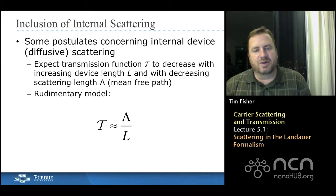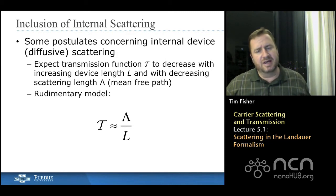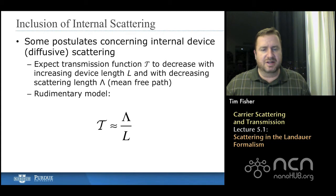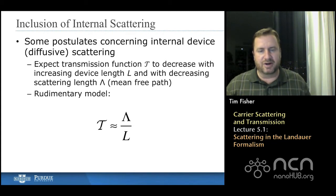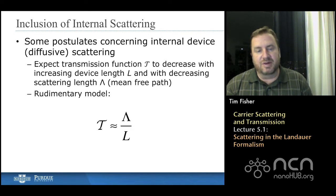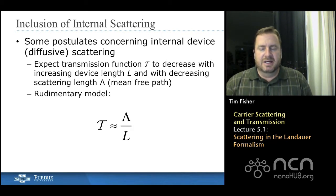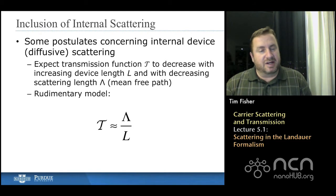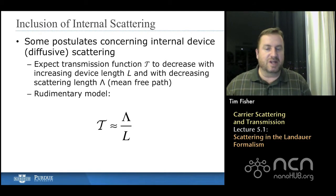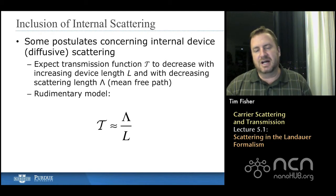We're going to start with a postulate. So let's say that inside of our device, on average, a carrier moves a certain distance between scattering events. And we've already discussed this a little bit when it came to kinetic theory. We call that the scattering length or the mean-free path.